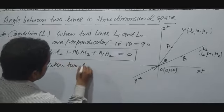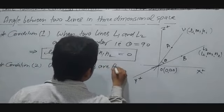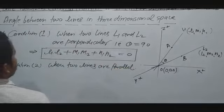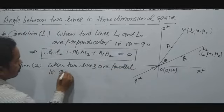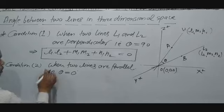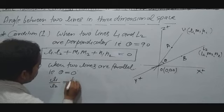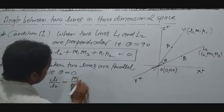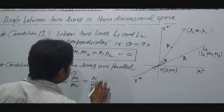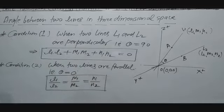Condition 2: When two lines are parallel, that is theta = 0°. In this case, the ratios of the direction cosines will be equal: L1/L2 = M1/M2 = N1/N2. This is the condition for two lines to be parallel.